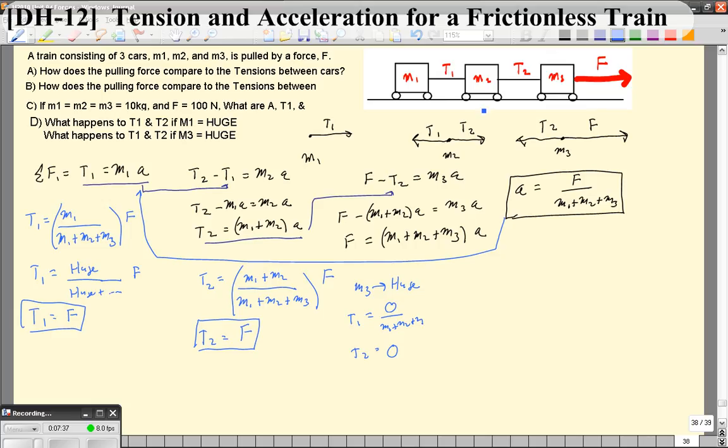So in the limiting case where M1 is huge, you get a tension 1 and a tension 2 that are essentially equal to the pulling force, whereas if the front car is huge, tension 1 and tension 2 are effectively 0.